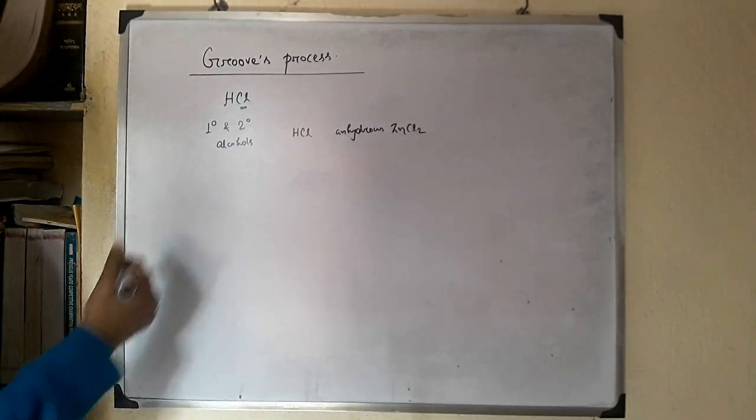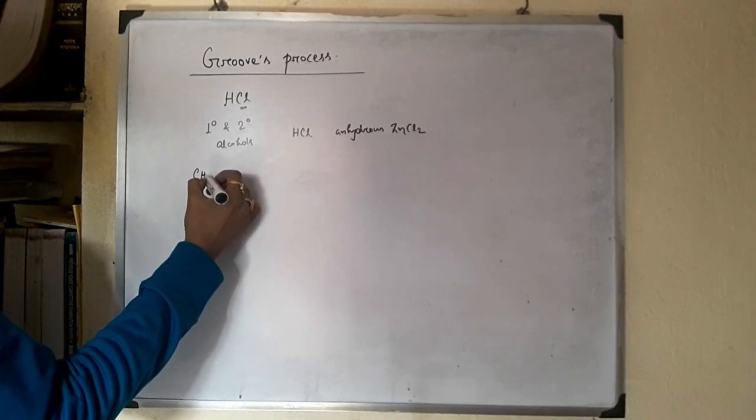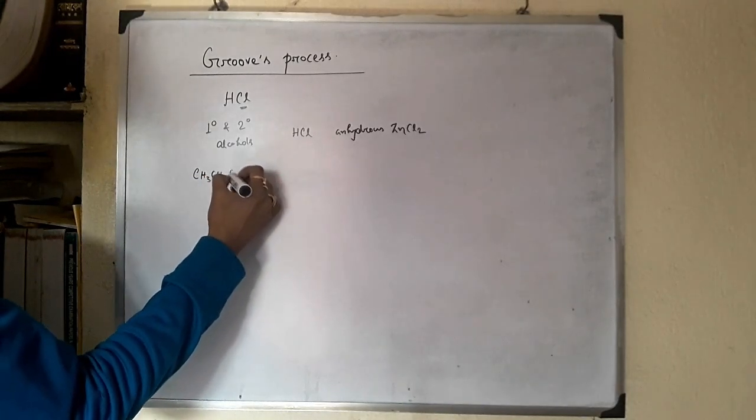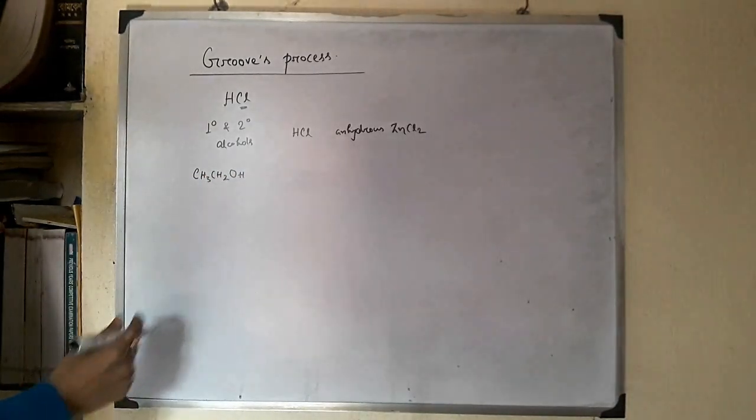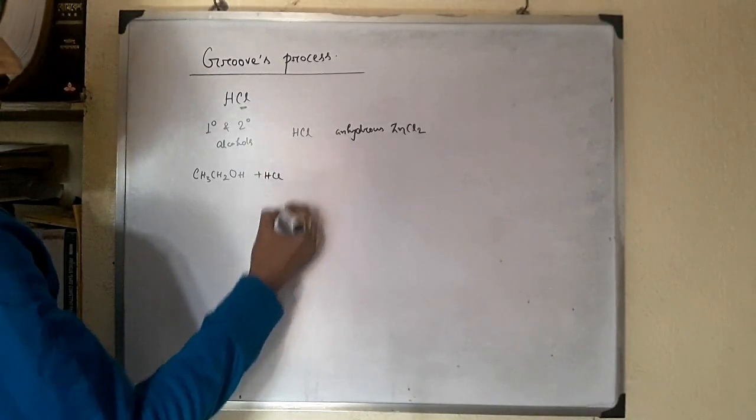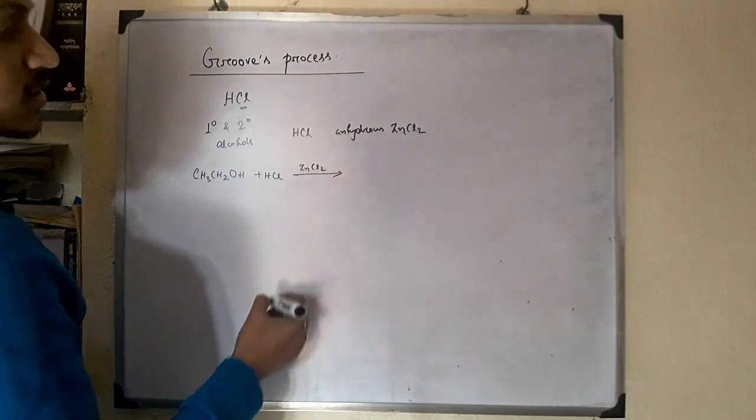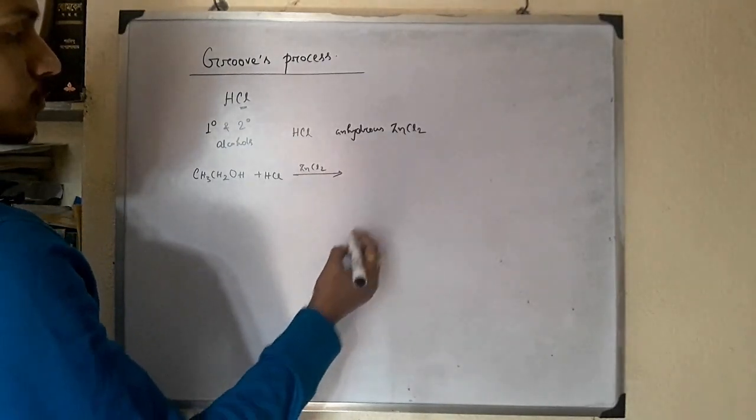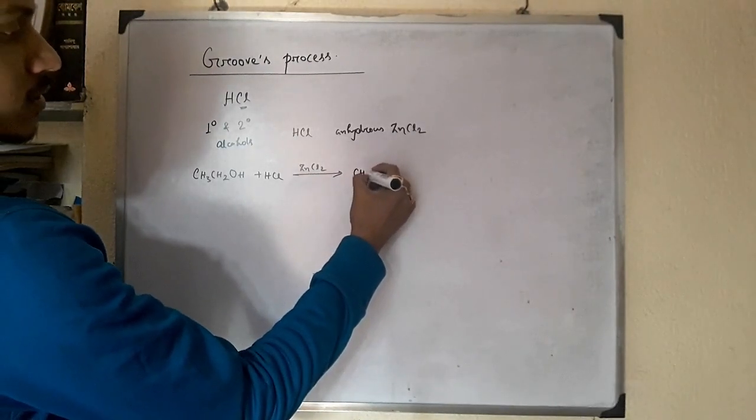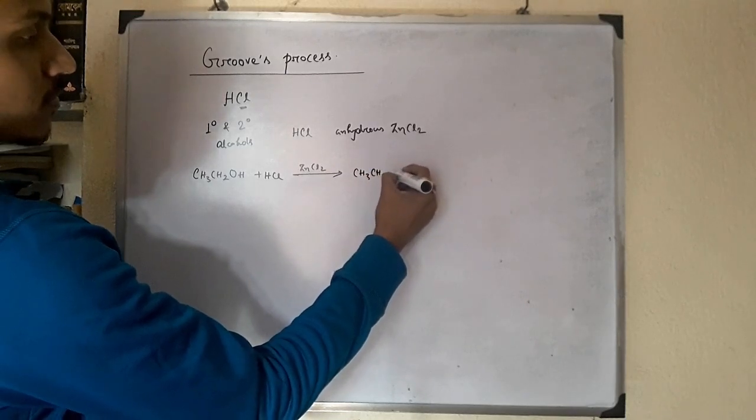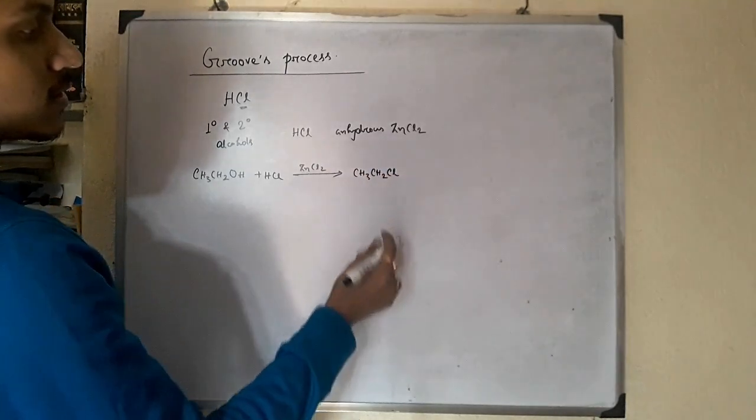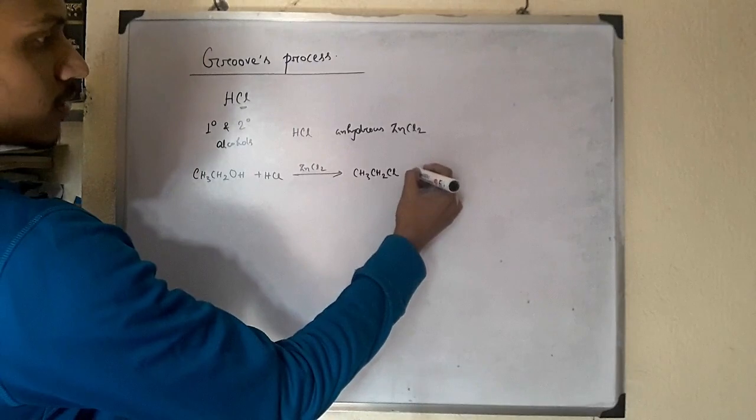Let's take the example of ethanol which is a primary alcohol. Ethanol reacts with HCl in the presence of anhydrous zinc chloride to form chloroalkane, ethyl chloride plus water.